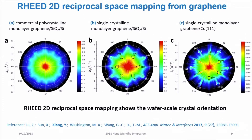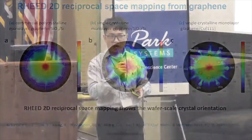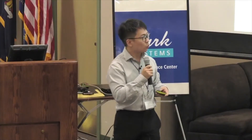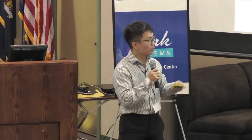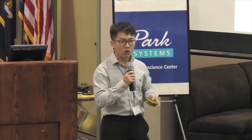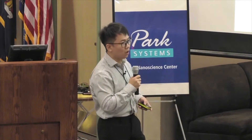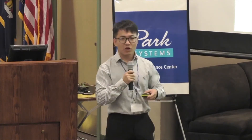I also want to emphasize that because the beam size of the RHEED system is centimeter-scale, what we actually measure is the wafer-scale crystal orientation instead of just the local orientation.